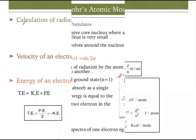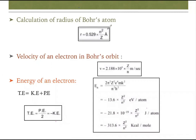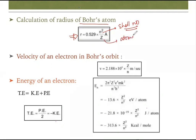Let's discuss the calculation of Bohr's radius. The Bohr radius formula is: r = 0.529 × n²/z ångströms, where n is the shell number, z is the atomic number, and ångström (Å) is the unit. Remember this formula.